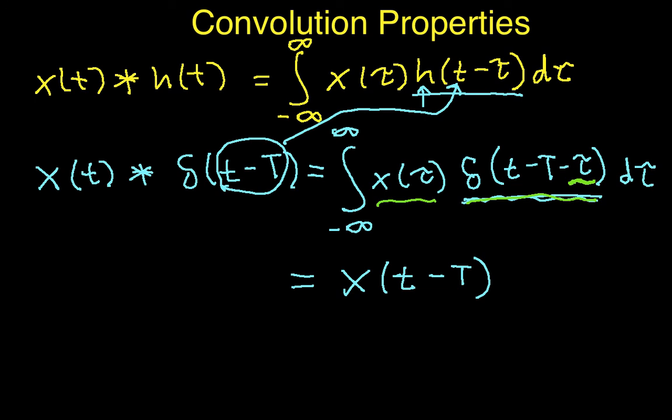So, this is actually a very important result, or a useful result, that x of t convolved with a shifted delta function takes the x and shifts it by the amount that the delta function was shifted. And again, this shows up in several different applications, but the most useful one is when you're looking at modulation of signals.